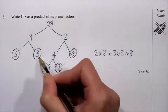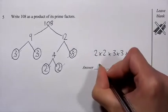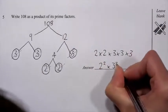I've got two 2's and 3 lots of 3. So if I wanted to write it out in index notation, that's 2 squared times 3 cubed.